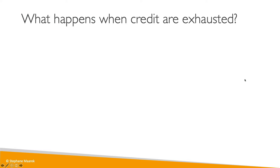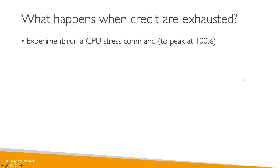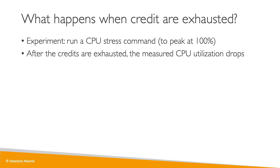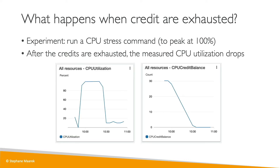So what happens when the credits are exhausted? I ran a little experiment: I ran the CPU stress command to peak at 100% CPU utilization on a T2 micro. We can see that after all the credits are exhausted, the actual measured CPU utilization will drop. Here in CloudWatch, I launched my instance and ran the stress command — as you can see, the CPU utilization skyrocketed all the way to 100%.